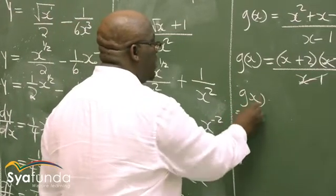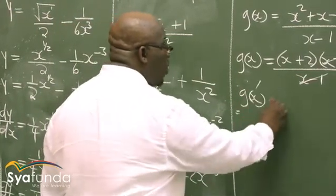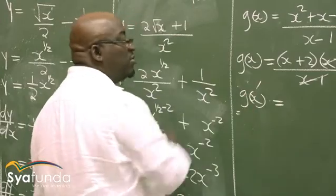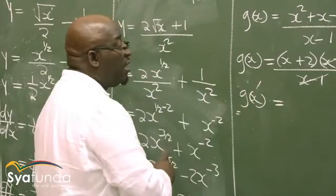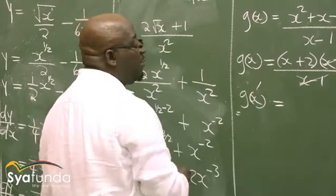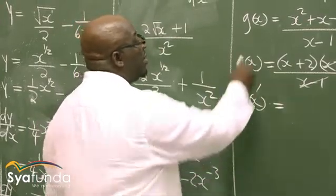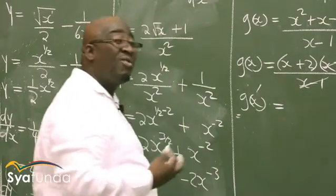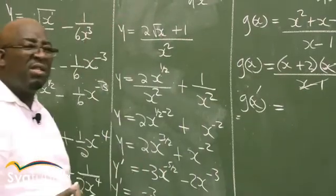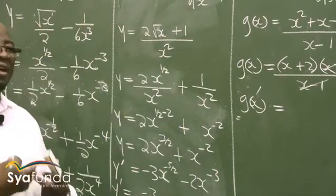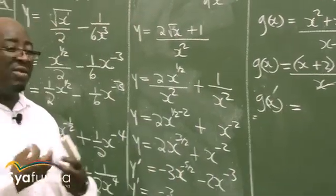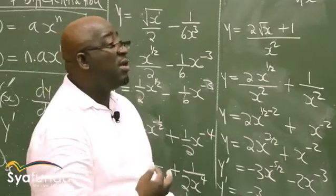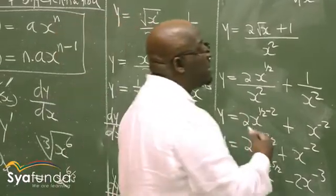Now we find the derivative g'(x). After cancellation, g(x) = x + 2. The instruction says to evaluate, meaning we find the actual numerical value at a particular point.